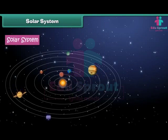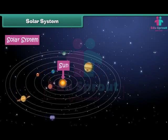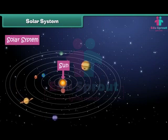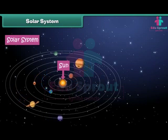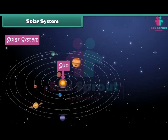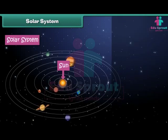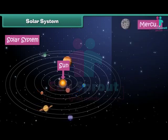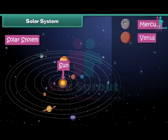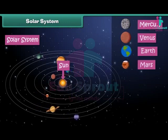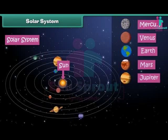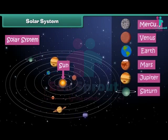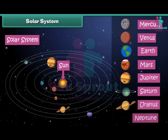We live in the solar system. The solar system is the family of the sun and its eight planets. The sun is placed at the center and the eight planets revolve around it. The eight planets are Mercury, Venus, Earth, Mars, Jupiter, Saturn, Uranus, and Neptune.